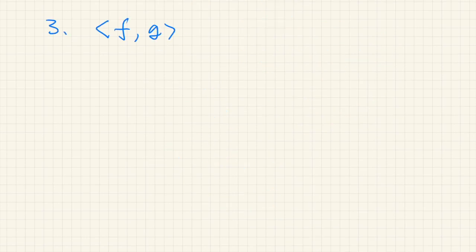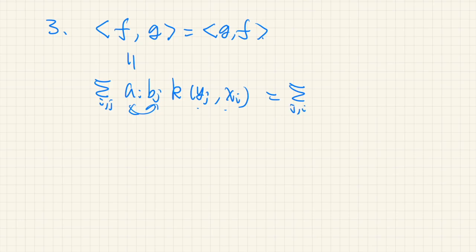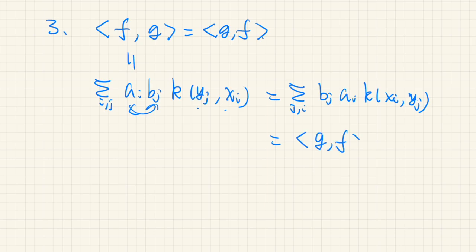The third axiom is symmetry: ⟨f, g⟩ = ⟨g, f⟩. This is almost trivial due to the symmetry of the kernel function. The left-hand side is sum over i, j of a_i · b_j · k(y_j, x_i). By symmetry of k, this equals sum over j, i of b_j · a_i · k(x_i, y_j), swapping the order of summation, which equals ⟨g, f⟩. So symmetry is proved.